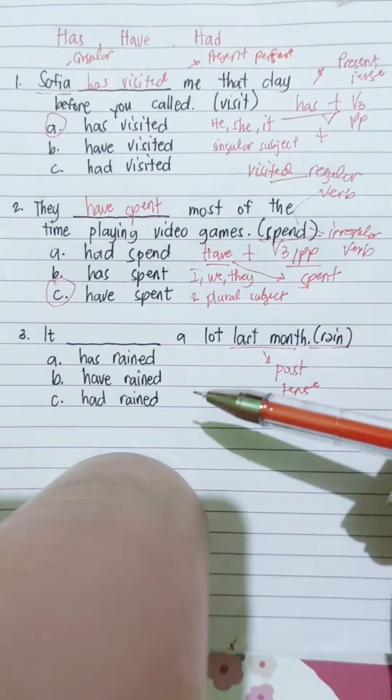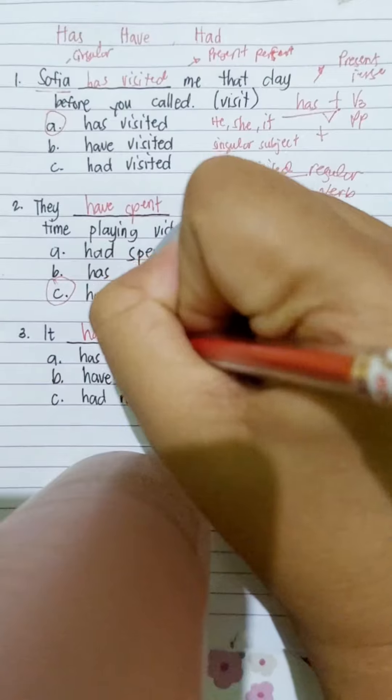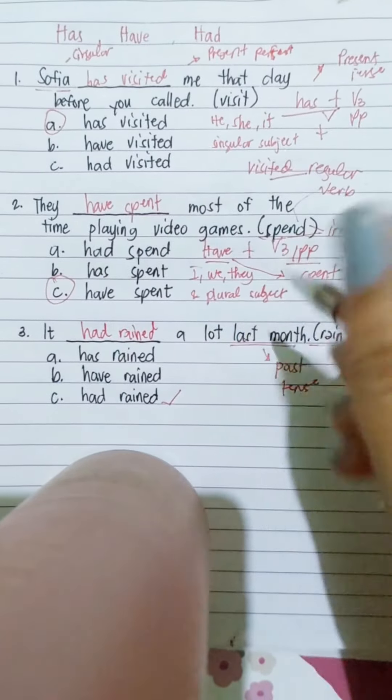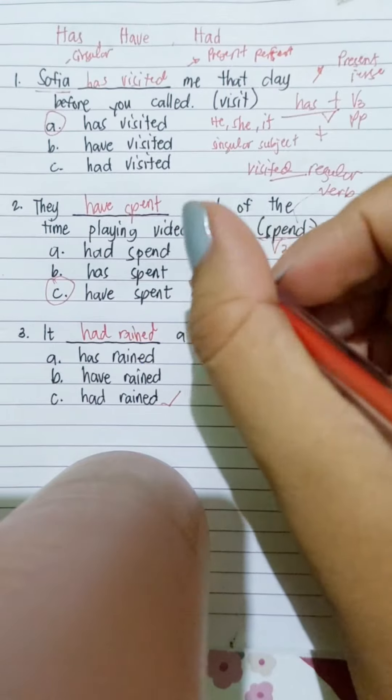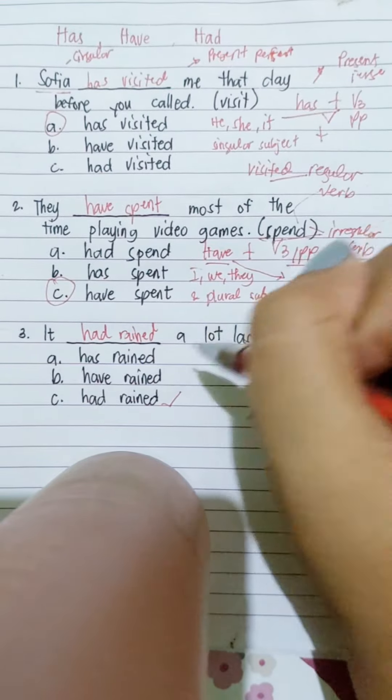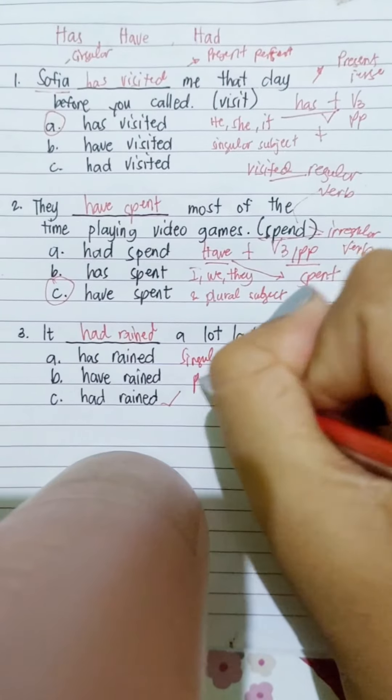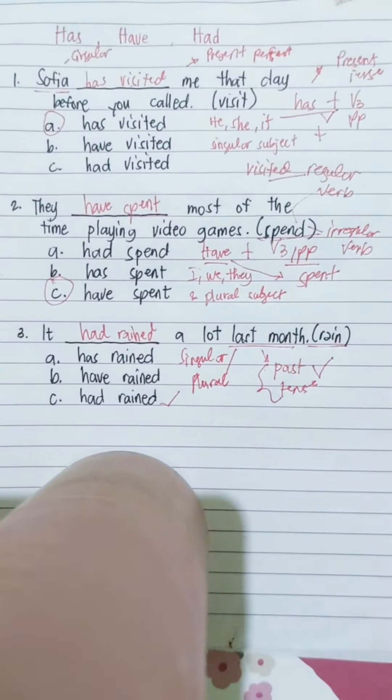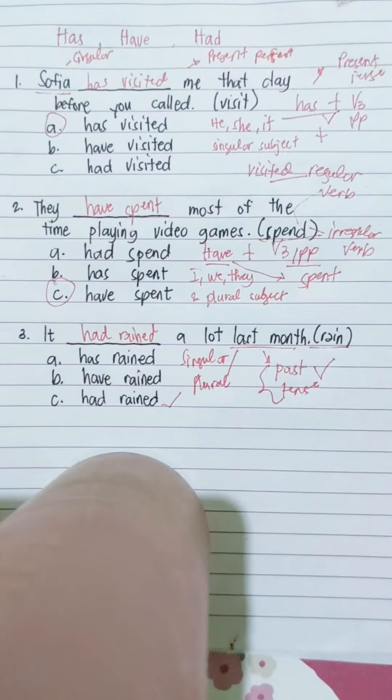So therefore you will use very good, had rained. We use had if the sentence is in the past tense. We use had if the subject is in all forms, whether it is singular or plural. As long as it's in the past tense, we use had. So the correct answer is had rained.